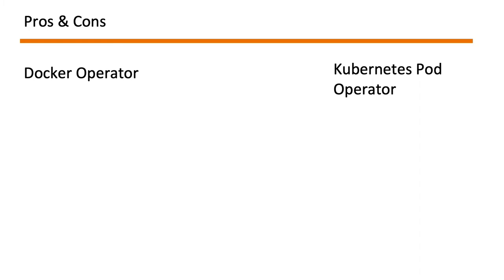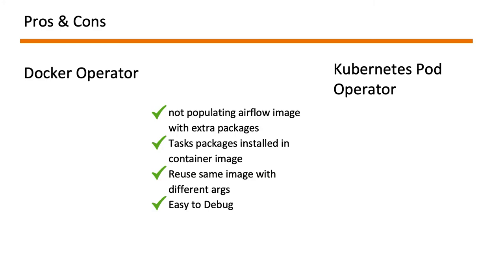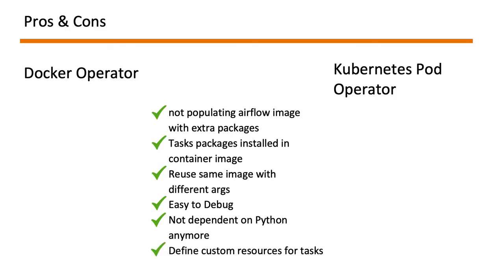Looking at the pros and cons of each operator: the common advantages both share are that we avoid overpopulating the Airflow image with extra packages, since task packages are installed in the container image. We can reuse the same image with different arguments, so one business logic can be broken down into small steps executed as different tasks within the same DAG. You can easily debug a DAG by looking at logs of only the faulty task and rerunning it. Also, you are not relying on Python anymore — you can use any programming language to perform business logic and let Airflow run it.